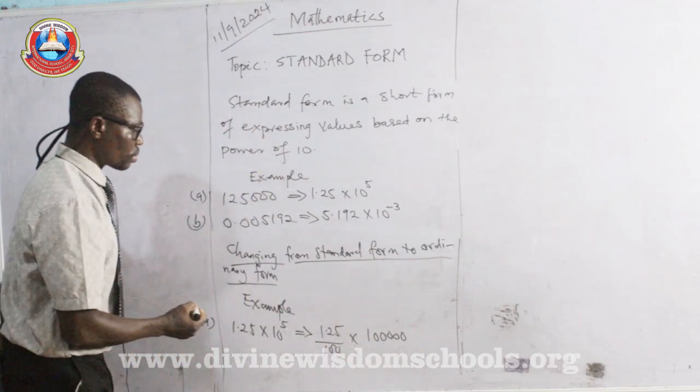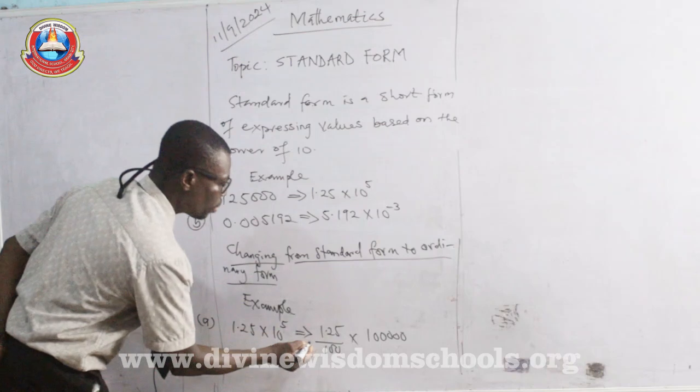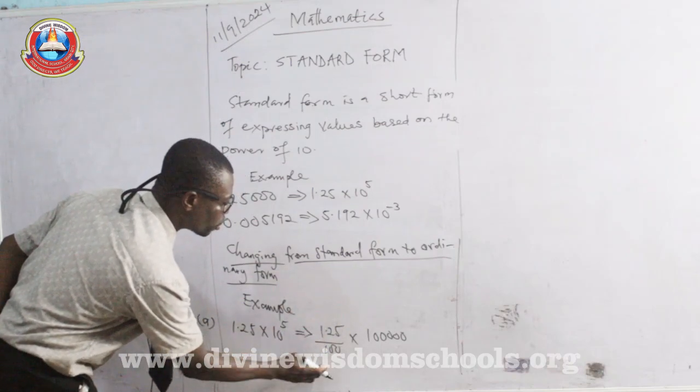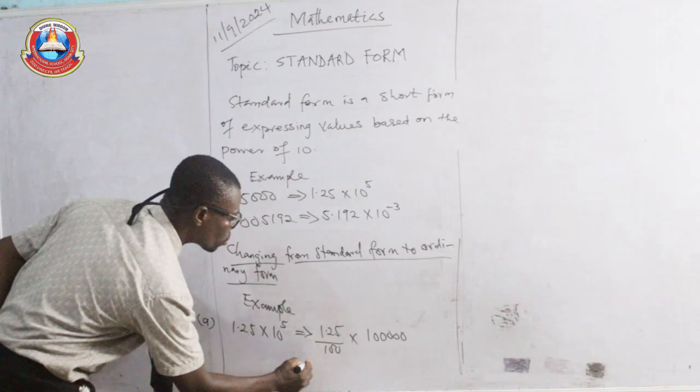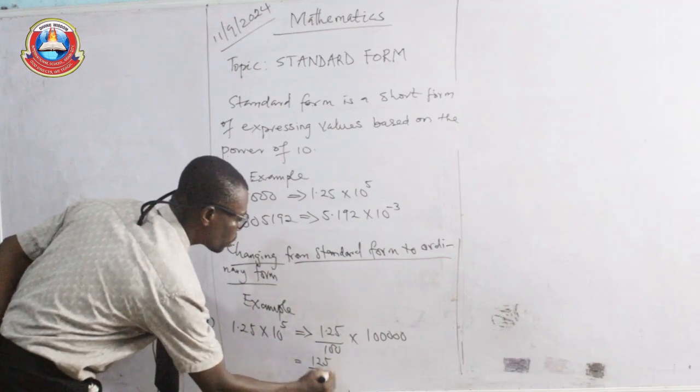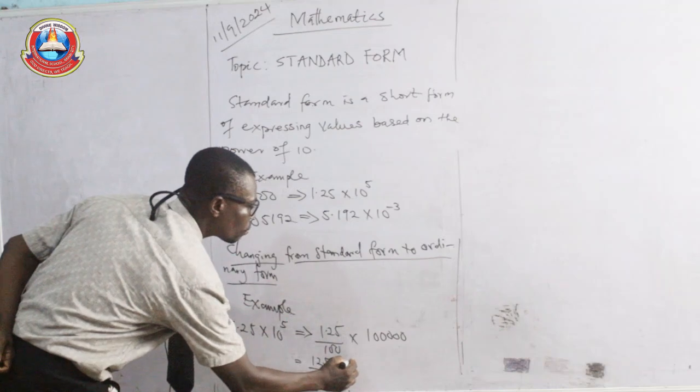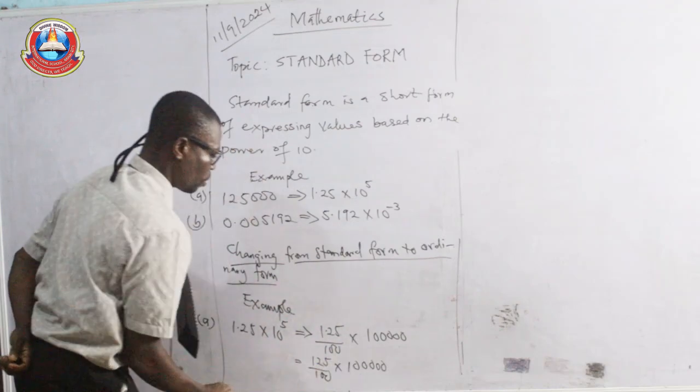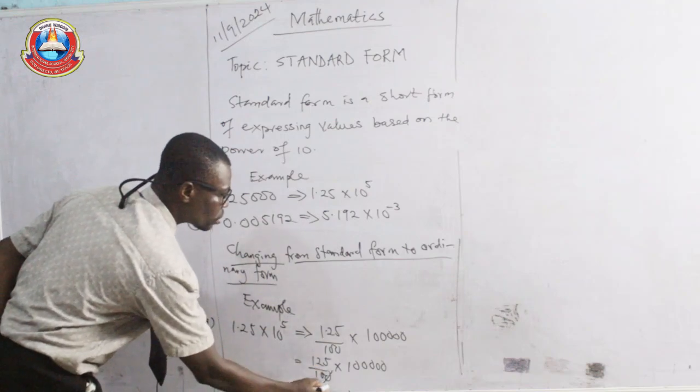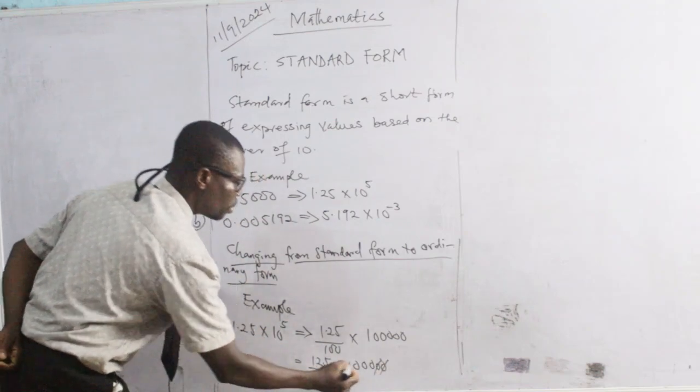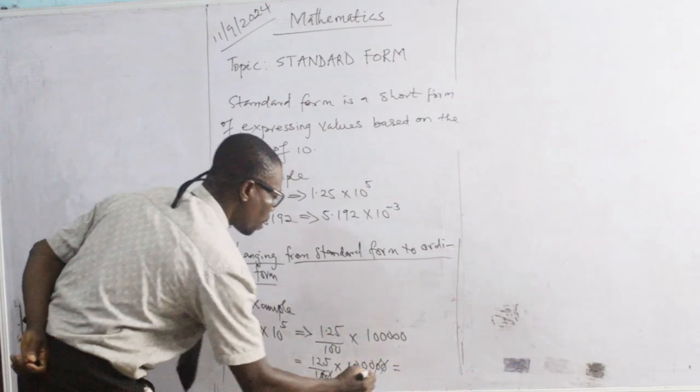Now, looking at this, at this time, this is changing decimal value to fraction. So, what you have here becomes 1, 2, 5 all over 100 times 1, 0, 0, 0, 0, 0. That is 5 zeros. 1, 2, 3, 4, 5. Now, you have 0 taking off this 0. You have this taking off this other 0. Then, when you multiply at what we have, it will be 1, 2, 5.